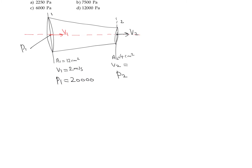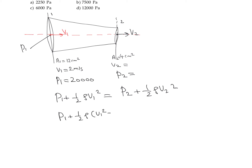We can apply Bernoulli's theorem between point 0.1 and point 0.2. Since it is a horizontal tube, gravitational potential energy is the same at both points and cancels out. So we write: P1 plus half rho V1 squared equals P2 plus half rho V2 squared. Rearranging to find P2: P2 equals P1 plus half rho times (V1 squared minus V2 squared).